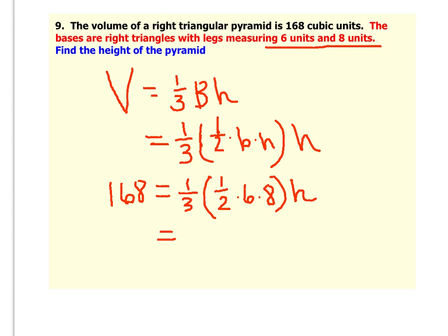If you figure out one-third times one-half times six times eight, you should get it to equal eight h equals 168. So to solve for h, you just divide by eight. And we get a height of 21 units.